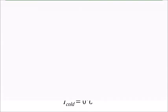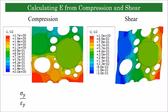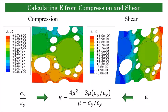To calculate elastic modulus, we first perform a compression analysis, which gives us the stress-to-strain ratio, and then we perform a shear analysis, which provides the shear modulus. Then we use the two in this equation to find the elastic modulus. The derivation for this equation is provided in the paper.